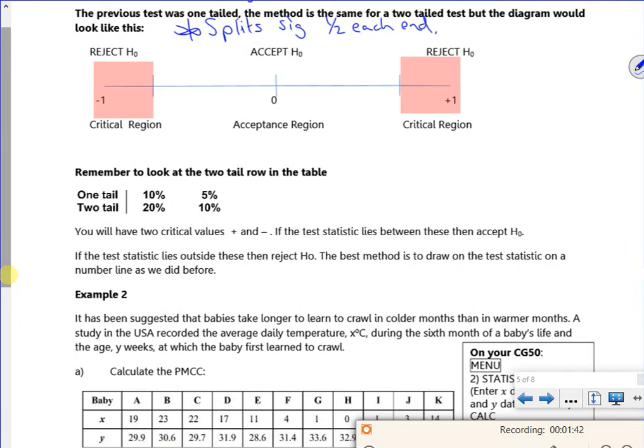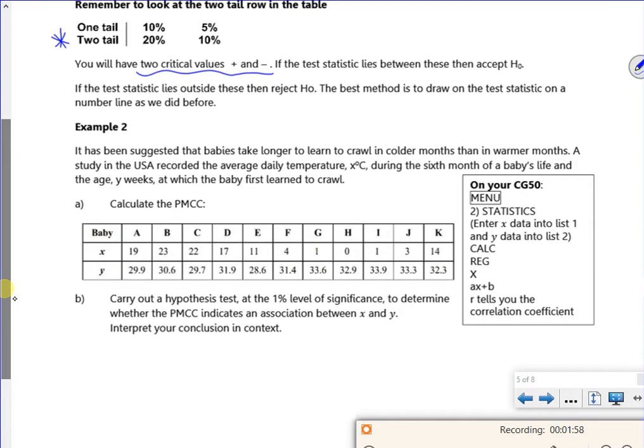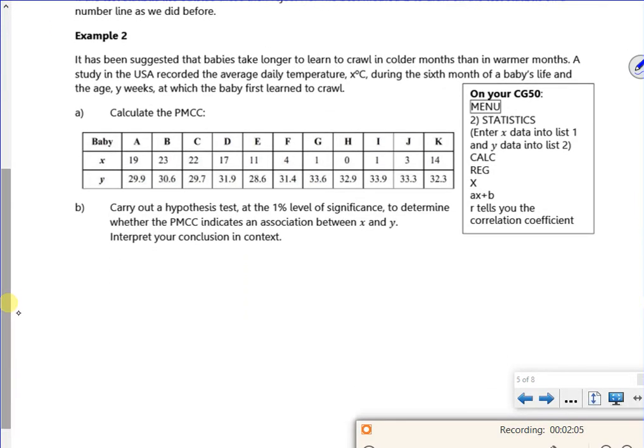I've got to double-check if it's one-tail or two-tail. So we'll practice these anyway, and remember to sort the sign out as well. Let's have a look at this second example then. It's been suggested that babies take longer to learn to crawl in the colder months than in the warmer months. You've got a study in the USA that recorded the average daily temperature and the age that they start walking at.